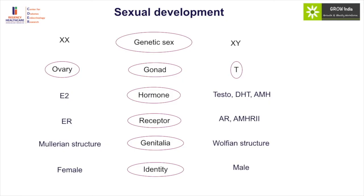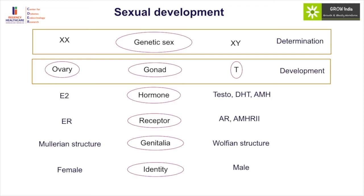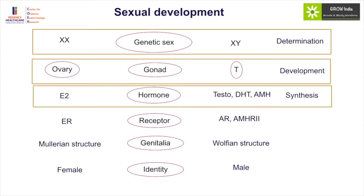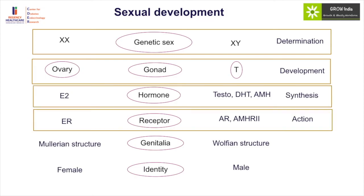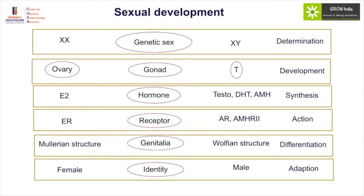Based upon this template, we can think of disorders of sexual differentiation as those associated with determination of the gender, development of gonads, production of hormones, their action, differentiation in the form of internal as well as external structures, and finally adaptation as far as specific gender identity is concerned.